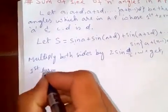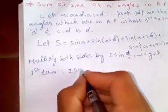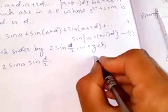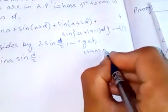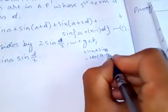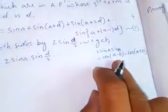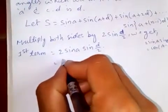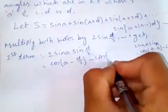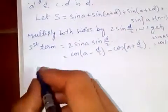For the first term: 2 sin(A) times sin(D over 2). We know the formula 2 sin(A) sin(B) equals cos(A minus B) minus cos(A plus B). Applying this formula here, with A as A and B as D over 2, we get: cos(A minus D over 2) minus cos(A plus D over 2).